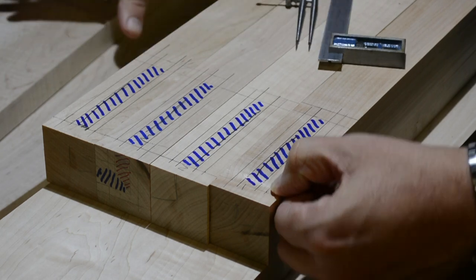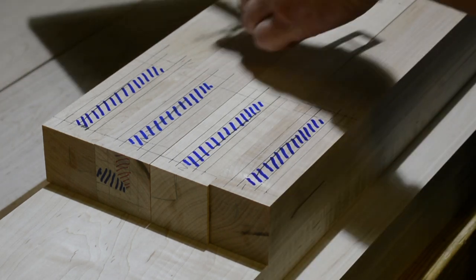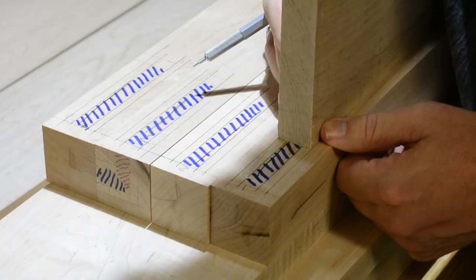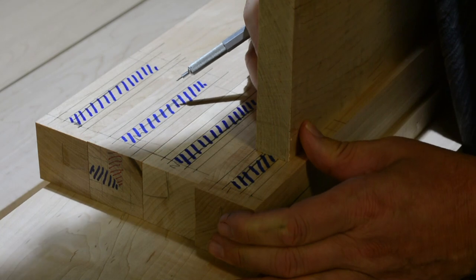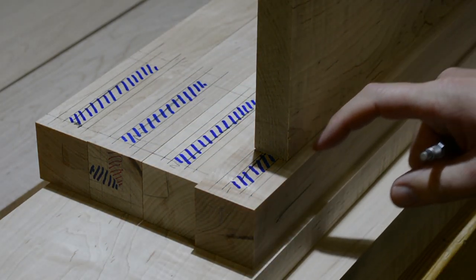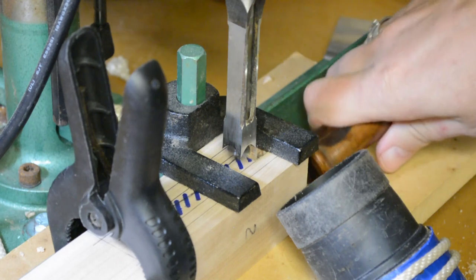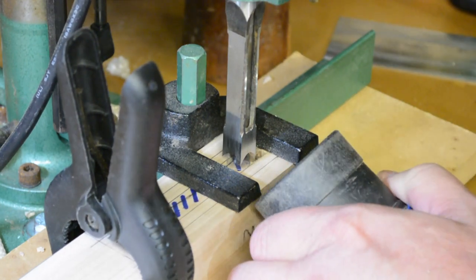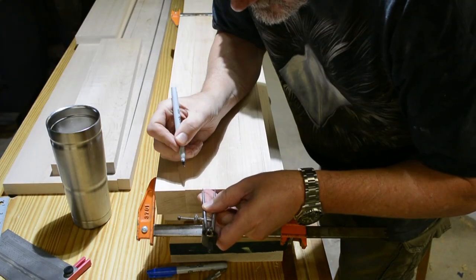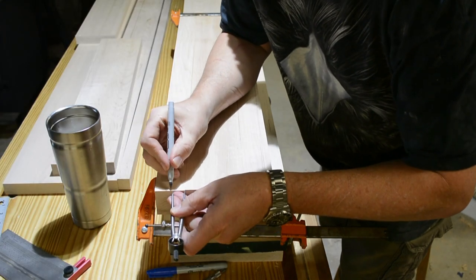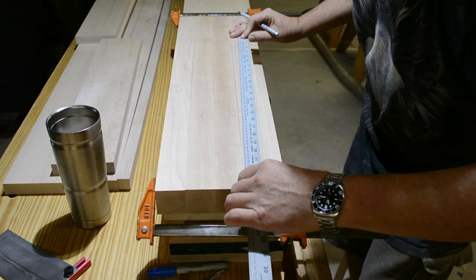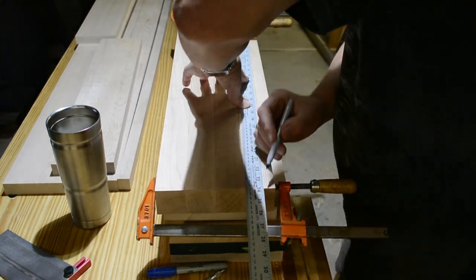Each leg gets two mortises, and here I am laying them out. I'm also comparing the reveal that if I position the mortise there, what do I end up with? It looks good, so I'm probably going to cut them just like that. Once they're laid out, you can simply cut them. I use a benchtop mortiser. Now that the legs are mortised, I can lay out the taper for the legs and go ahead and cut the taper, and it won't interfere with trying to cut the mortise.